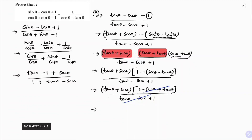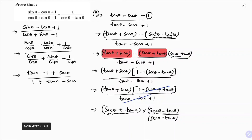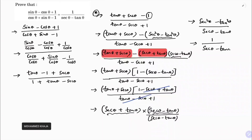We are left with sec θ + tan θ. Now I need to express this as 1 / (sec θ - tan θ), so I'll multiply and divide by (sec θ - tan θ): (sec θ + tan θ)(sec θ - tan θ) / (sec θ - tan θ). The numerator is of the form (a + b)(a - b) = a² - b², giving sec²θ - tan²θ, which equals 1 by identity. So we get 1 / (sec θ - tan θ), which is the required result.